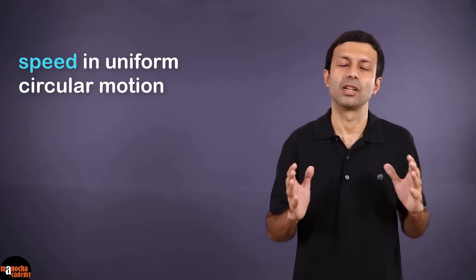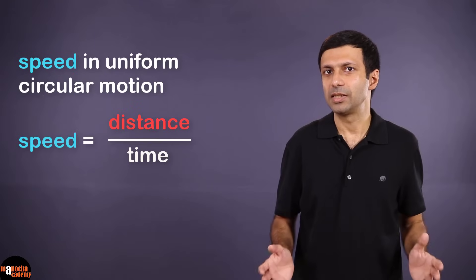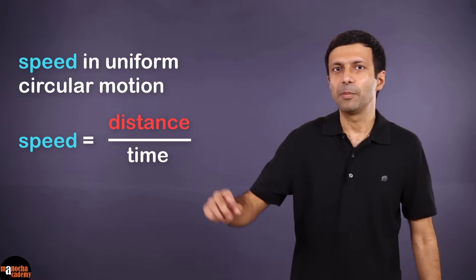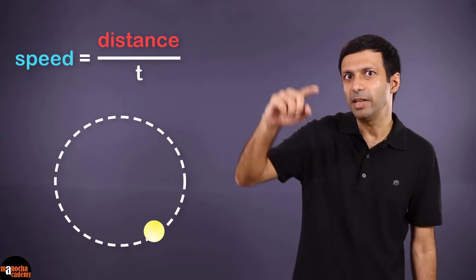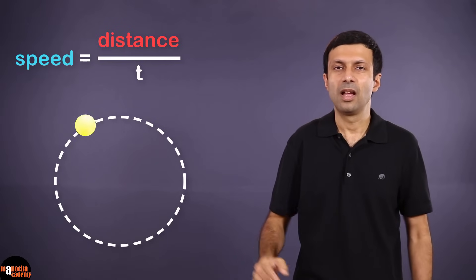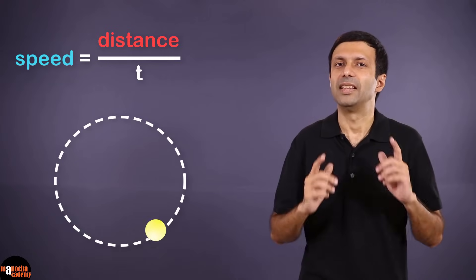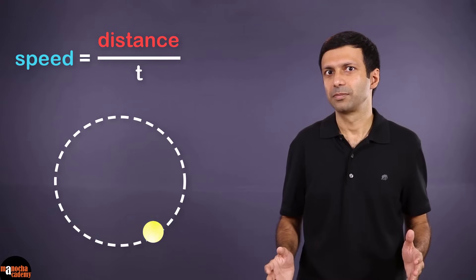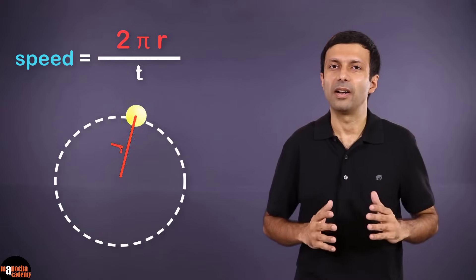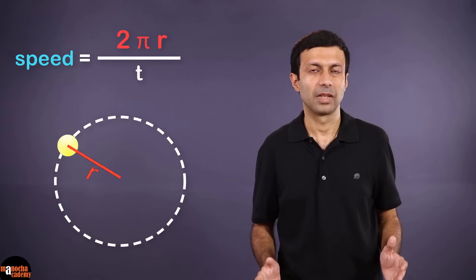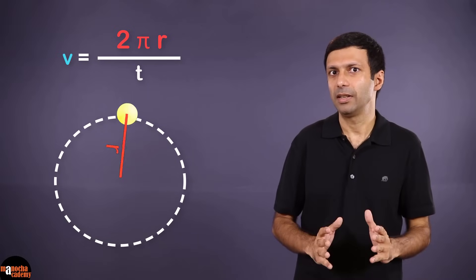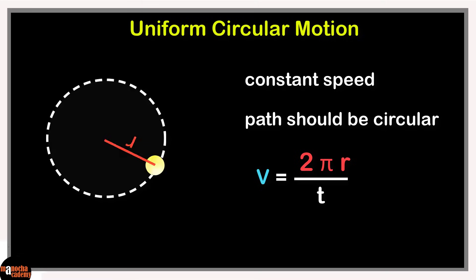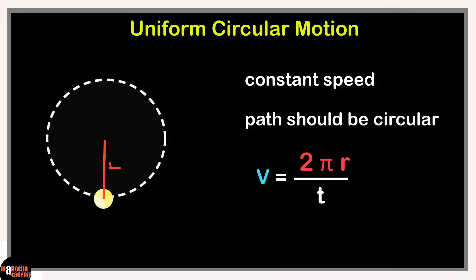How do we calculate the speed in uniform circular motion? We know that speed is distance divided by time. Let's say the body takes T seconds to complete one full revolution — one full circle. The distance traveled is the circumference of the circle, which is 2πr, where r is the radius. So the speed of the body is 2πr/T, or we say the magnitude of the velocity is 2πr/T. Let's place this concept and formula on our concept board.